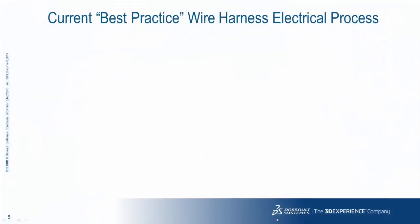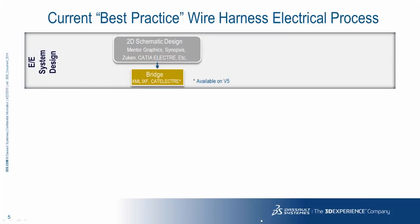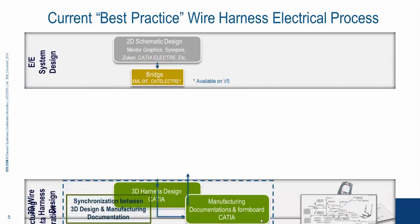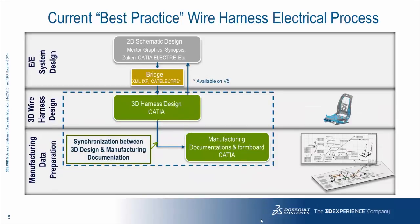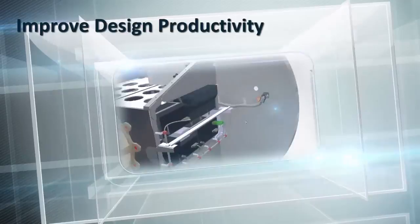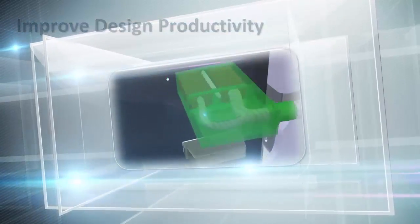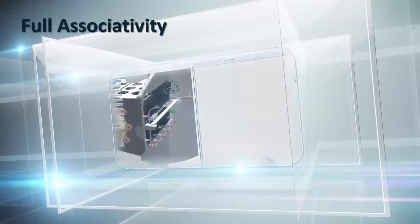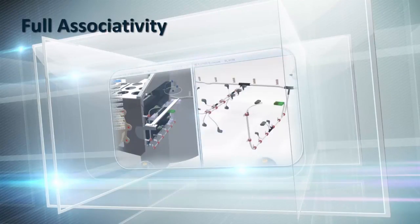To improve this current best practice would be to have a manufacturing application that is closely linked to the 3D design, including automatic transfer of all needed information, synchronization, and update once the change is performed in 3D. In this case, there's no transfer of information between applications because they're all integrated in the same platform, sharing the same data describing the electrical wire harness. This process will improve design productivity through full associativity of the 3D and harness flattening models, enabling design synchronization and concurrent engineering.